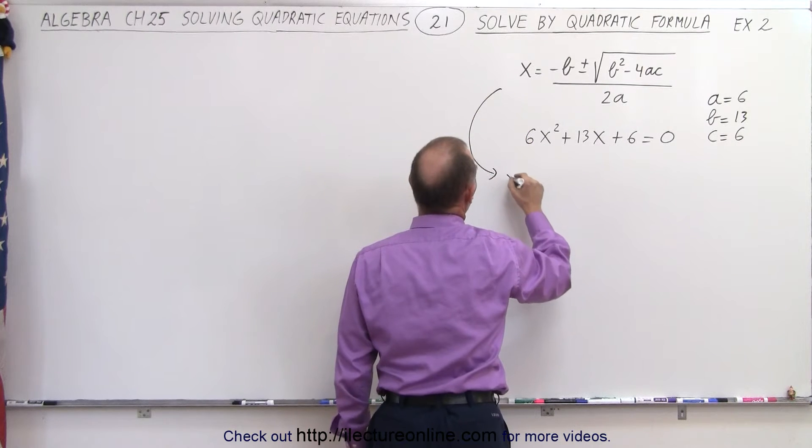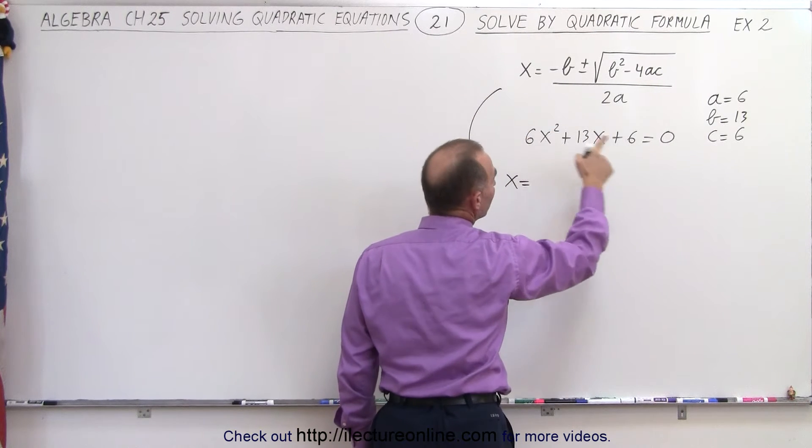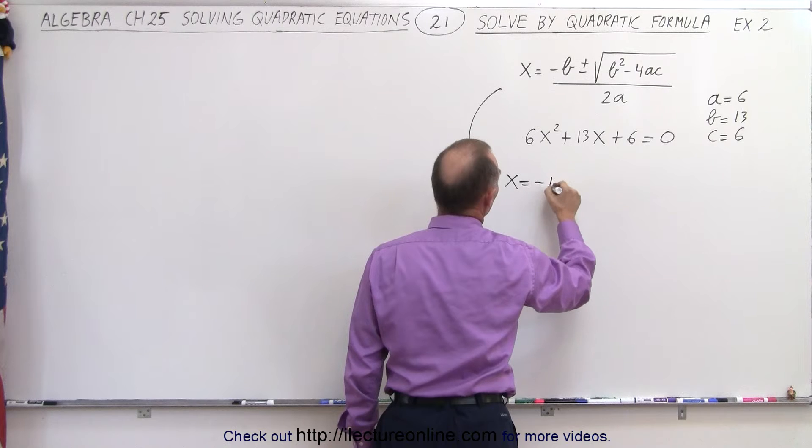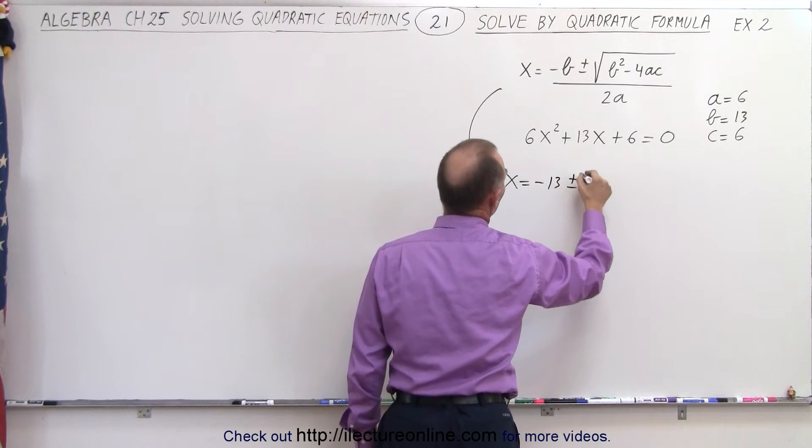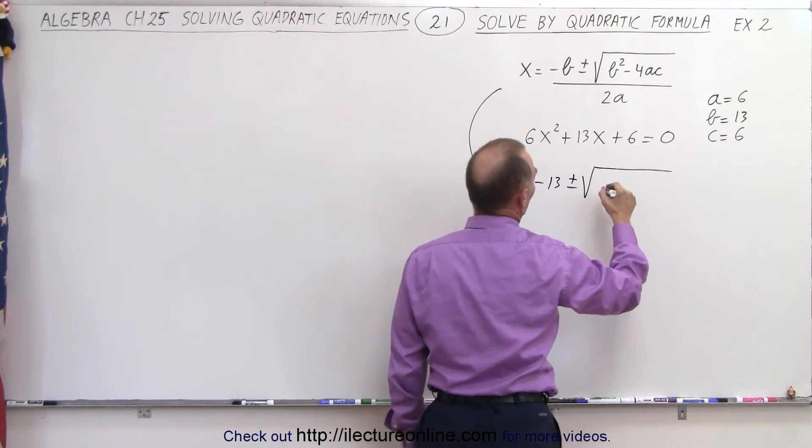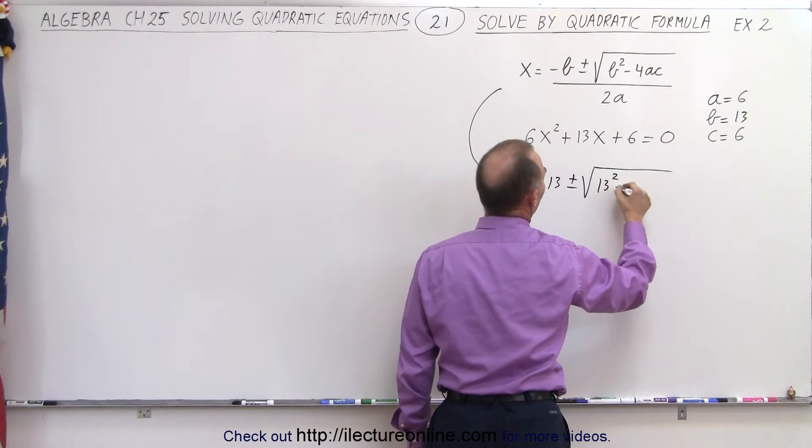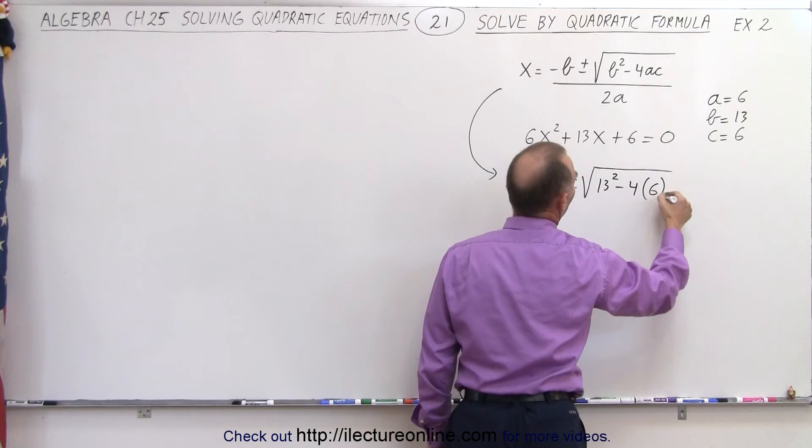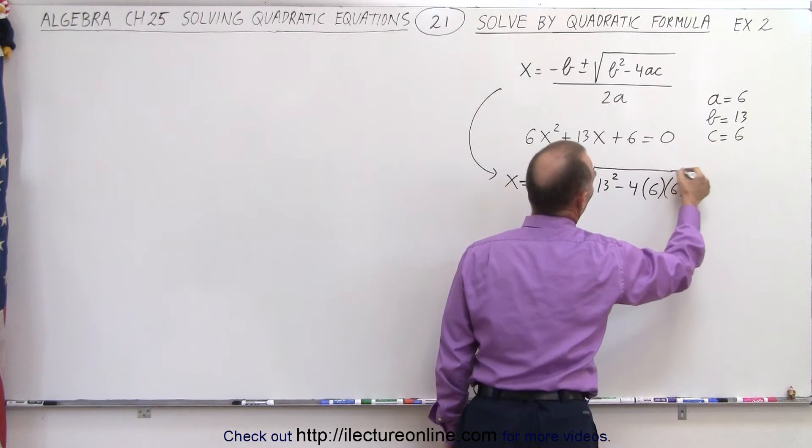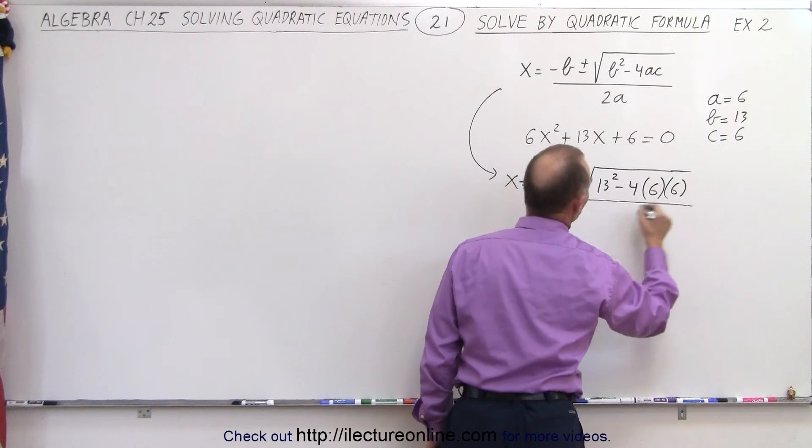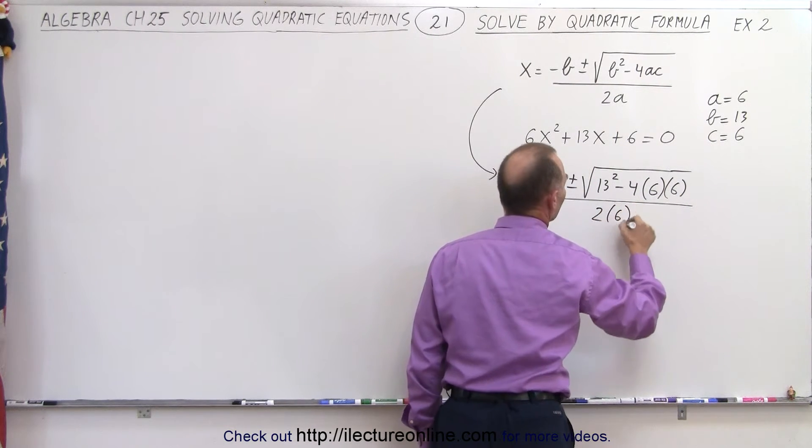So that means that we have x is equal to minus b, since b is 13, that's a minus 13, plus and minus the square root of b squared, which is 13 squared, minus 4 times a, which is 6, times c, which is 6, all divided by 2 times a, that would be 2 times 6.